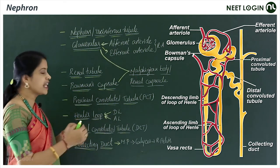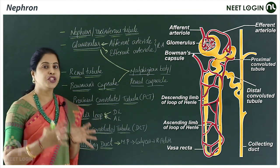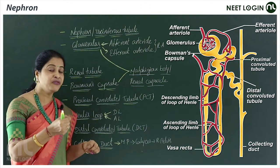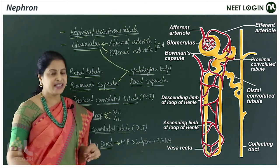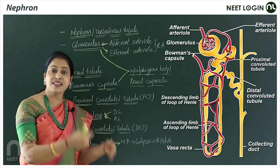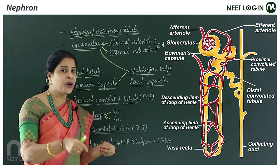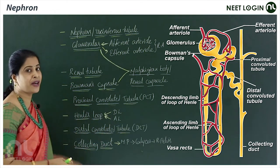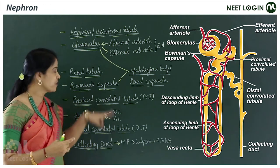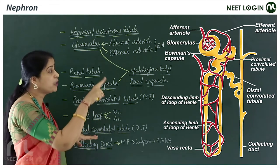The Bowman's capsule continues as the proximal convoluted tubule (PCT), which is lined with simple cuboidal epithelium with brush borders. This is an important point frequently asked in NEET examinations. The PCT then leads into a hairpin-turn loop.